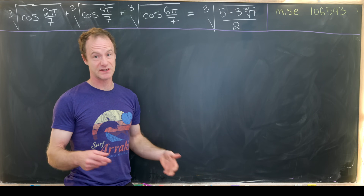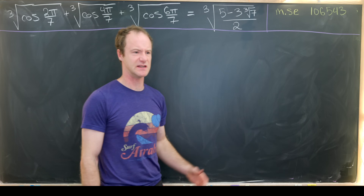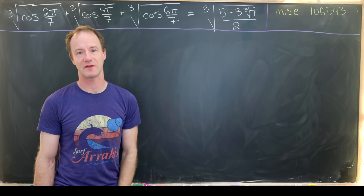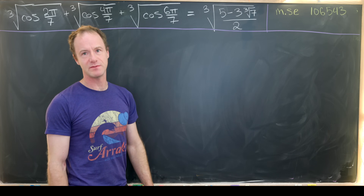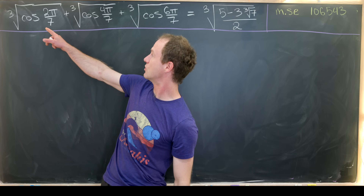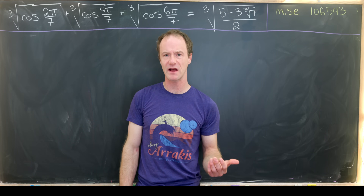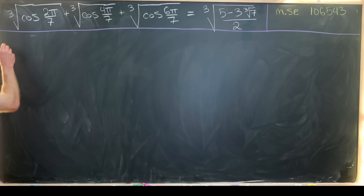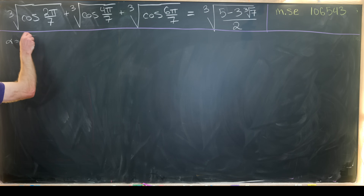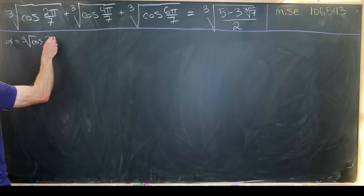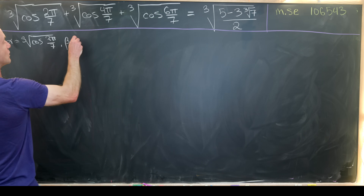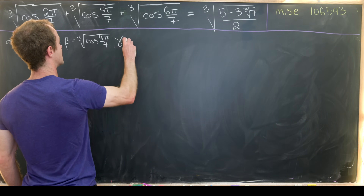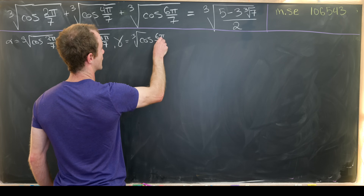My derivation of this identity is very much based on an answer from a Math Stack Exchange post, so you can find the information about that post there. To get started, instead of looking at the cube roots directly, we'll introduce notation: let α equal the cube root of cos(2π/7), β equal the cube root of cos(4π/7), and γ equal the cube root of cos(6π/7).